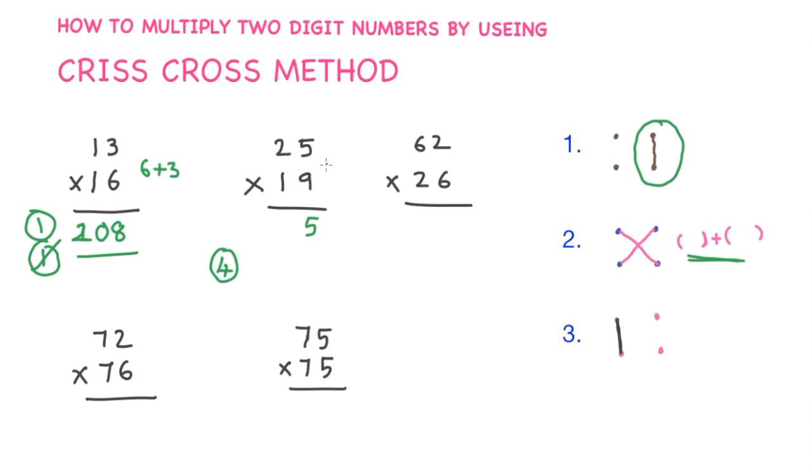9 twos are 18. Plus 1 five is 5. 18 plus 5 is 23. 23 plus 4 is 27. Keep 2 aside.